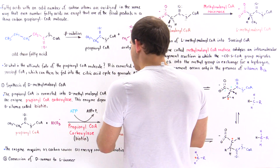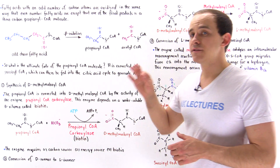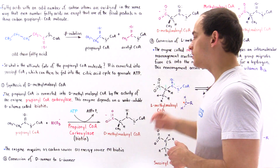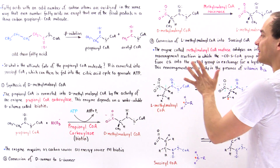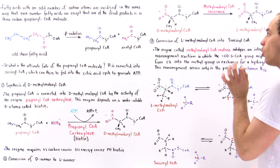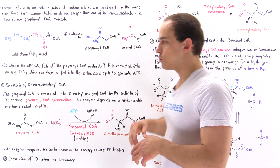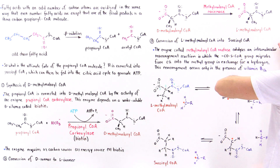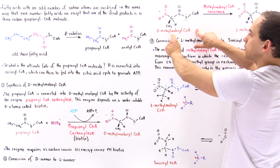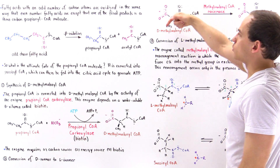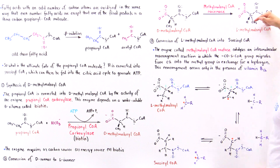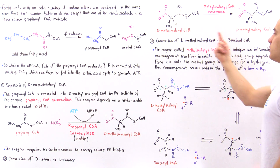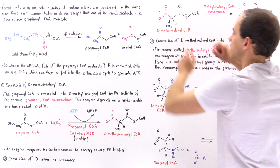In step number 2, we take the D-methylmalonyl coenzyme A and transform it into the L-isomer form. We convert D-methylmalonyl coenzyme A into L-methylmalonyl coenzyme A because the enzyme in the third step only uses the L-isomer and not the D-isomer. The enzyme that catalyzes step 2 is methylmalonyl coenzyme A racemase, which transforms the D-methylmalonyl coenzyme A — with the methyl group pointing out of the board — into the L-isomer form, in which the methyl group points into the board.